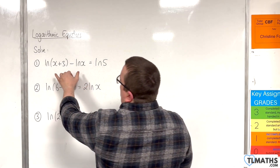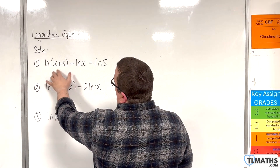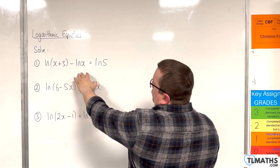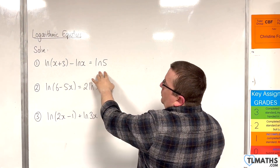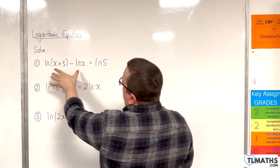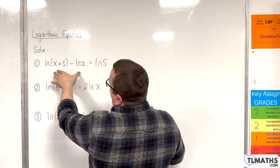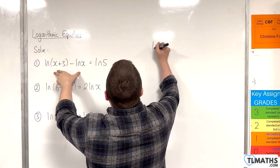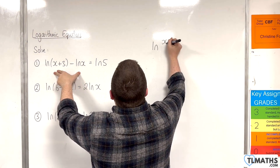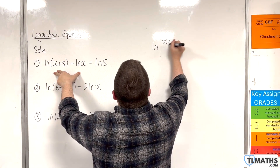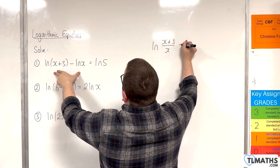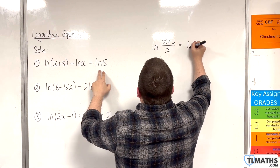For the first one, we have the natural log of x plus 3, take away the natural log of x, is equal to the natural log of 5. On the left-hand side we can use the quotient rule and write that as the natural log of x plus 3 over x, and that's equal to the natural log of 5.